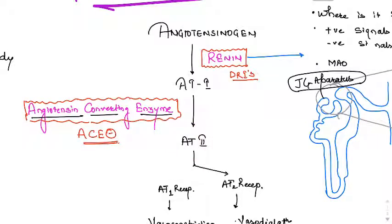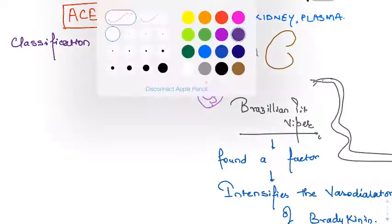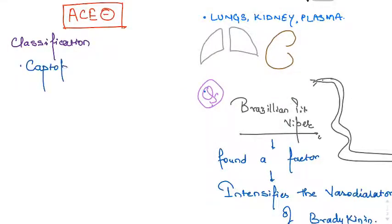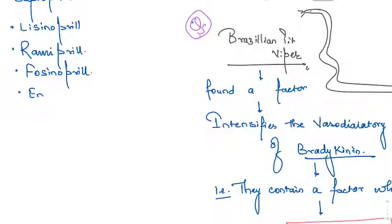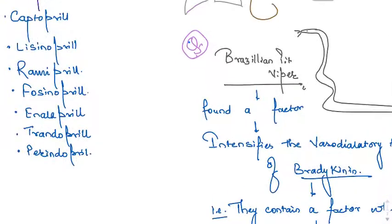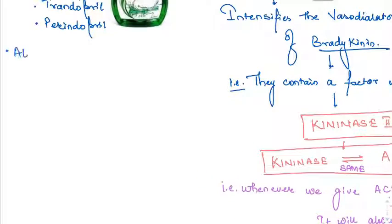Angiotensin receptor blockers specifically block angiotensin 1 receptors. For ACE inhibitors, the classification includes captopril, lisinopril, ramipril, fosinopril, enalapril, trandolapril, and perindopril.